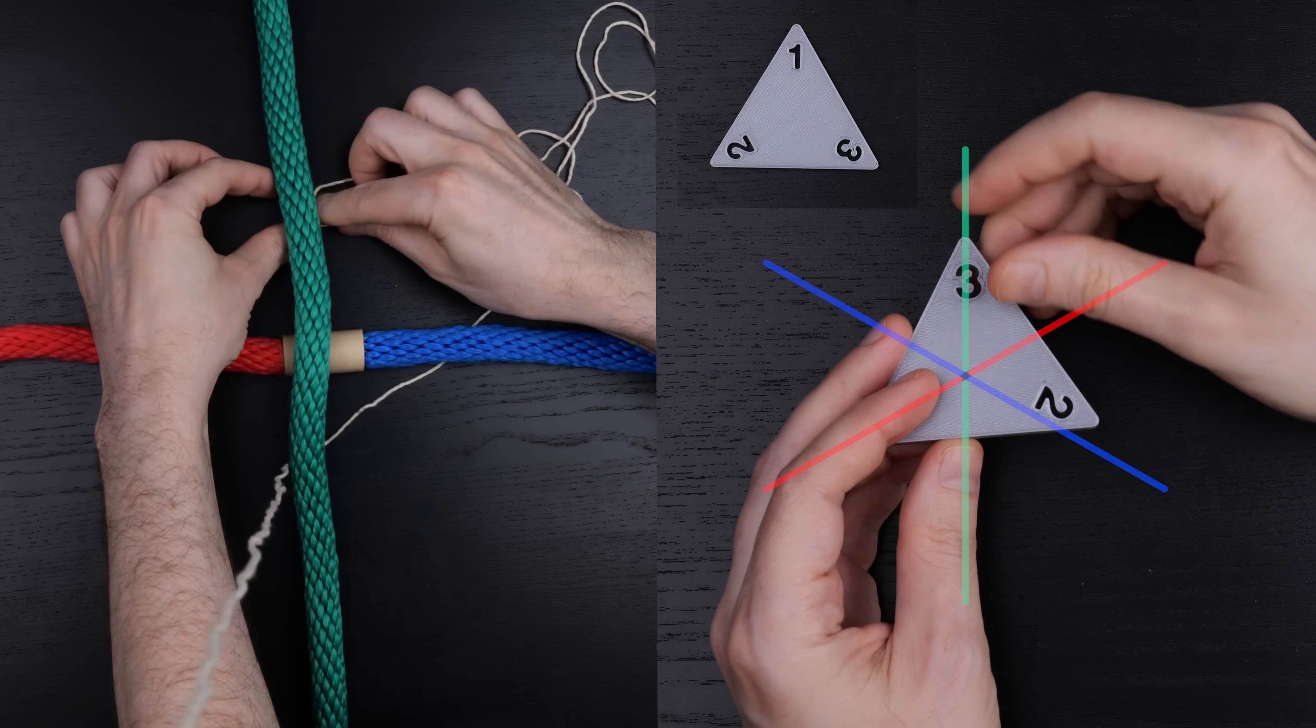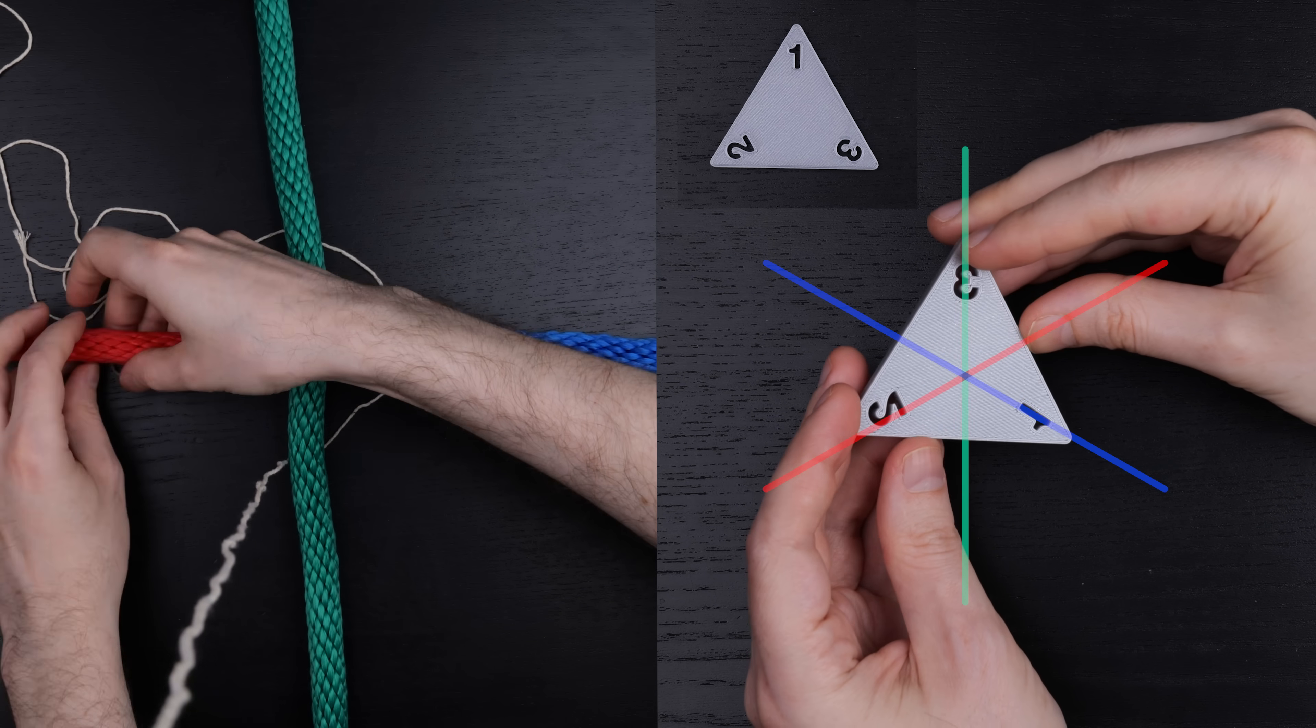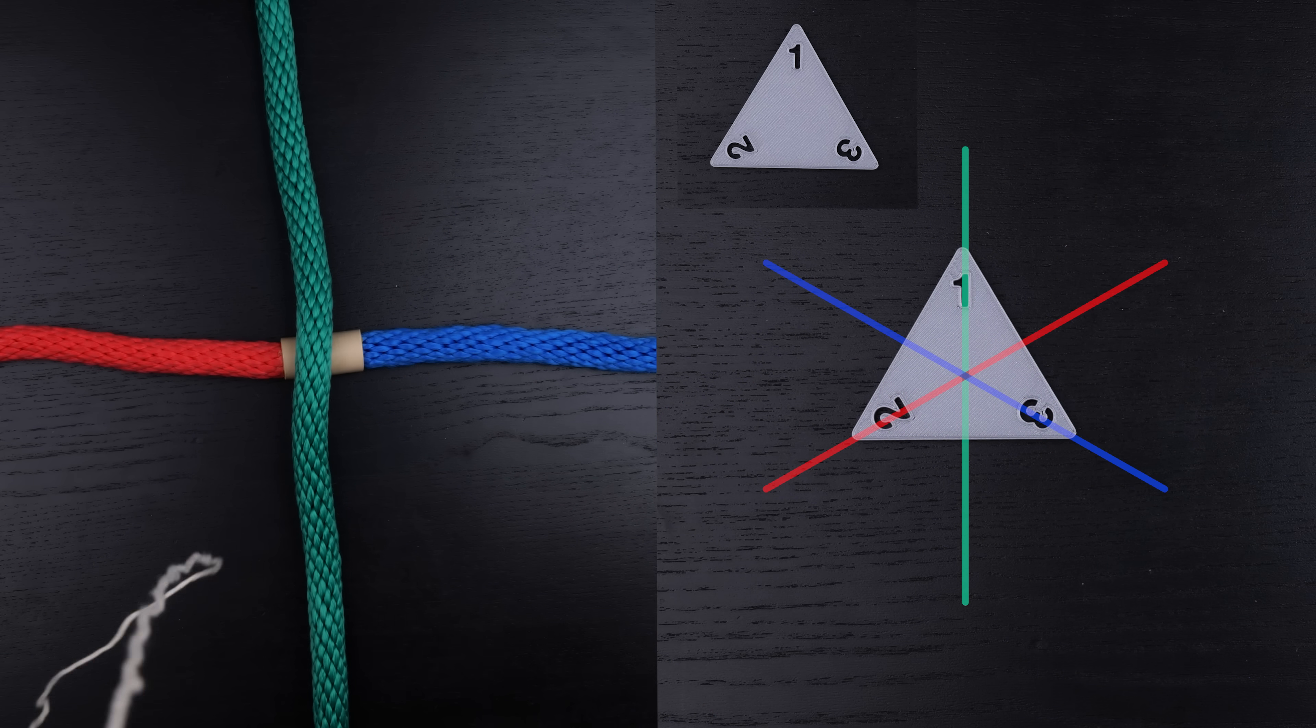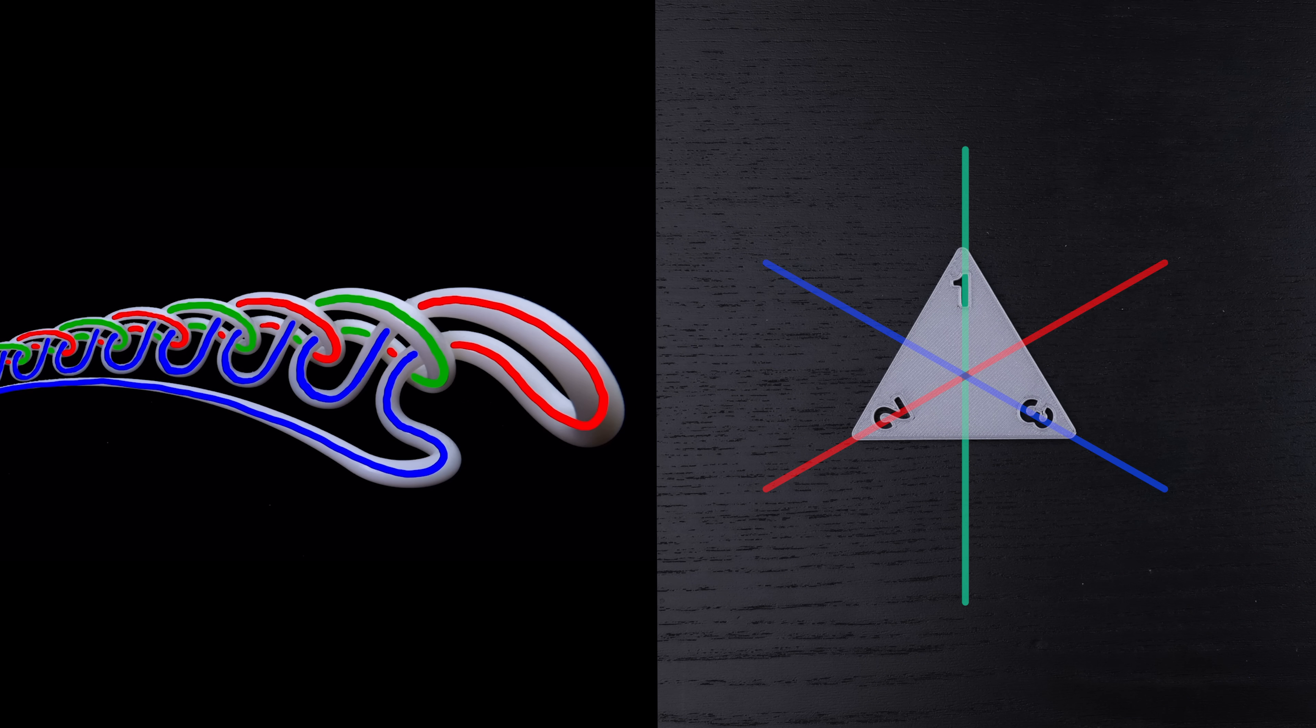First we flip across the green axis, then the blue axis, then green again, and then finally red. And we end up back where we started. So the relations of the fundamental group also hold when mapped to the symmetries of the triangle, and we have a non-trivial homomorphism to those symmetries.